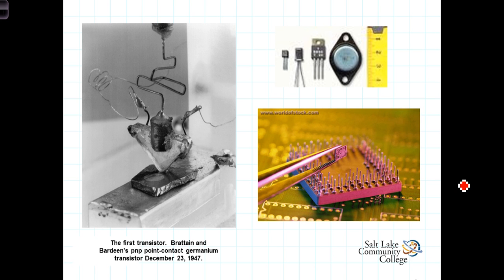We have here a picture of the first operational transistor. It was designed at Bell Laboratories back in 1947. It is a bipolar junction transistor, and as we'll see, there are three terminals here with a collector, an emitter, and a base terminal.